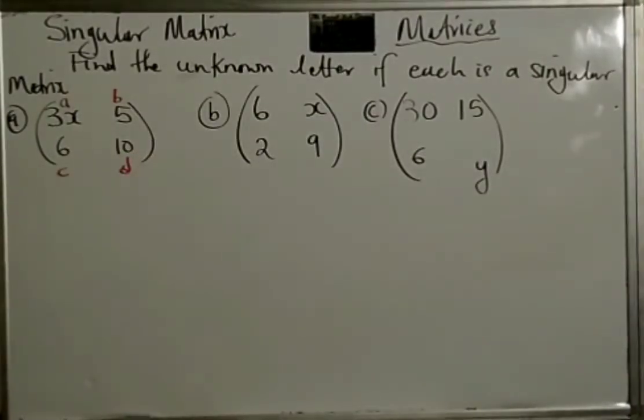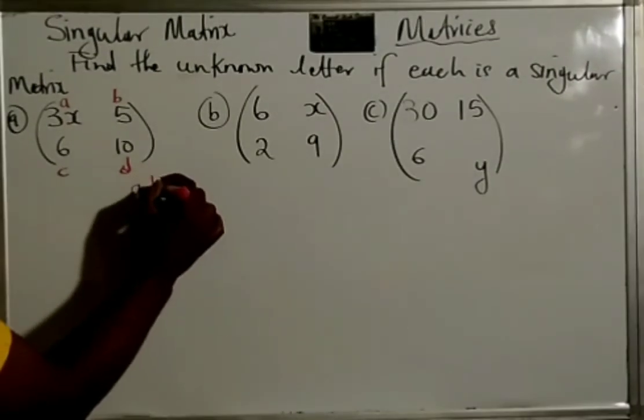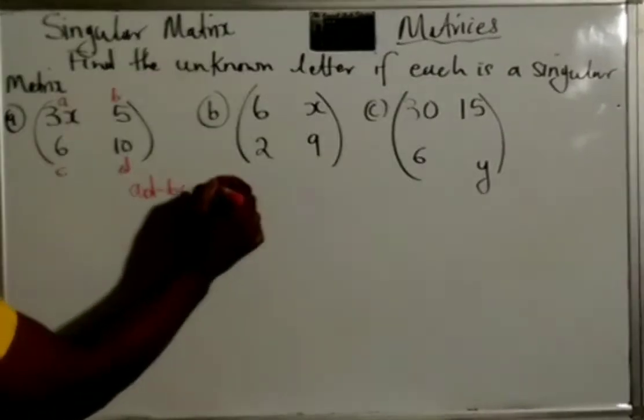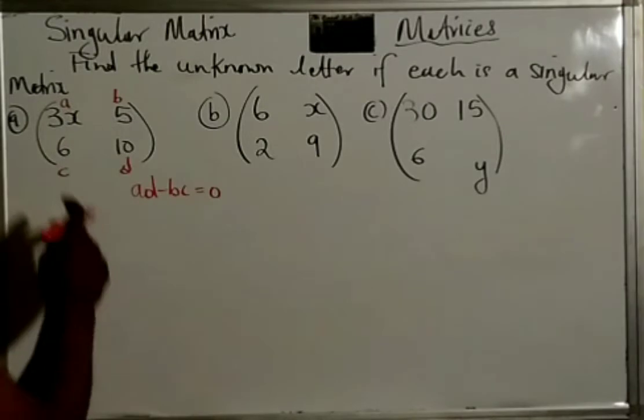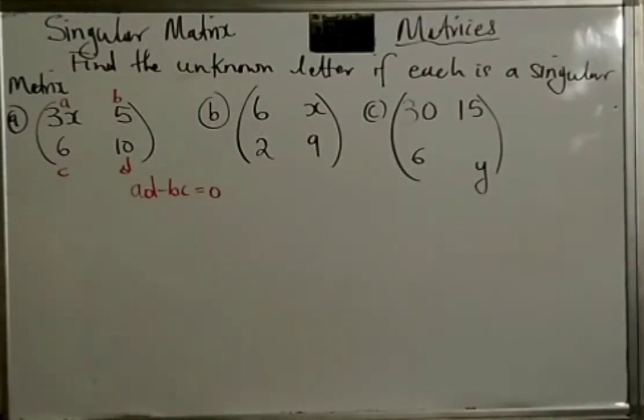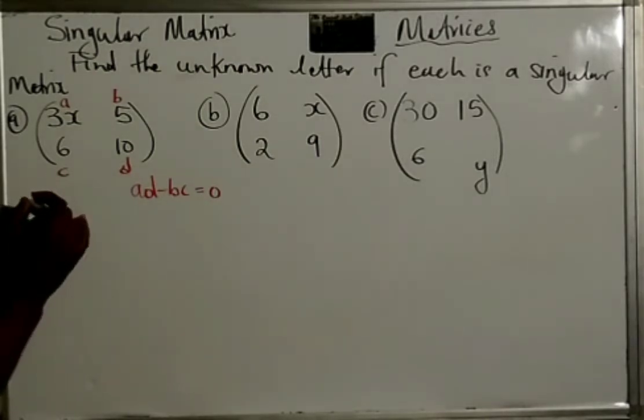Alright, so it says find the unknown letter if each is a singular matrix. Now, what we have to remember, every matrix is in the form ABCD, and the determinant is AD minus BC. Now, when the determinant is equal to zero, it is said to be a singular matrix. So, the fact that they say that this is singular, it means that A times D minus BC is equal to zero. So, what we can do is just set out the equation like that.